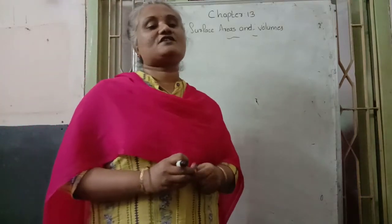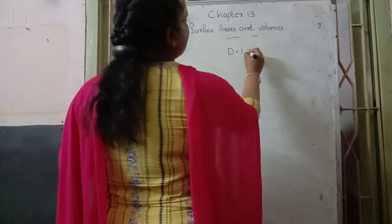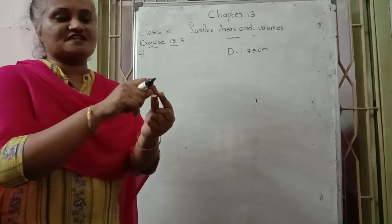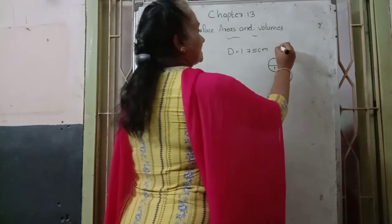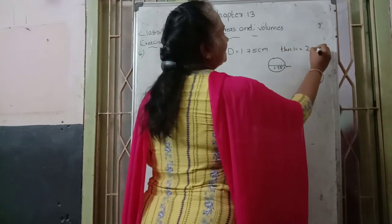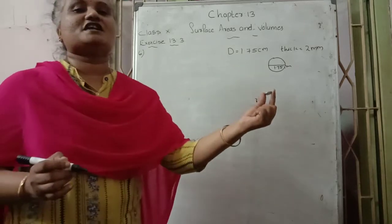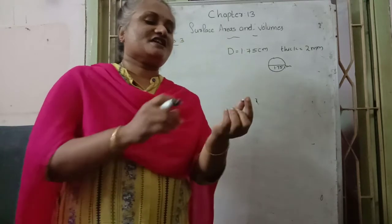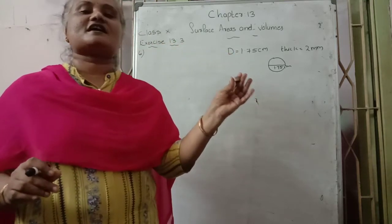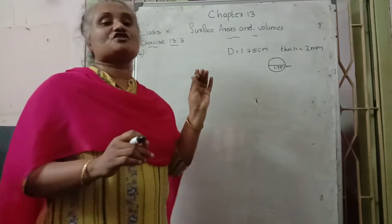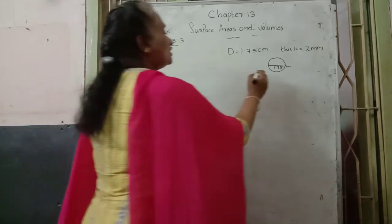In the 6th question, they are asking: there is 1 silver coin. The diameter of that silver coin is given as 1.75 cm. The thickness is given as 2 mm. Then they ask how many such coins are required to melt and make a cuboid shape. The length, breadth, and height of that cuboid are also given.